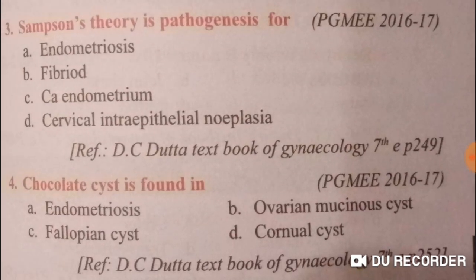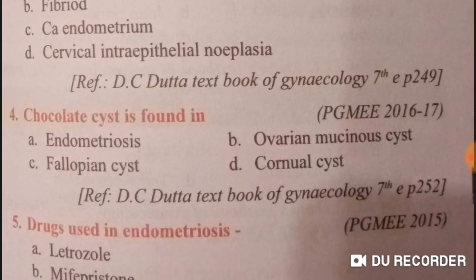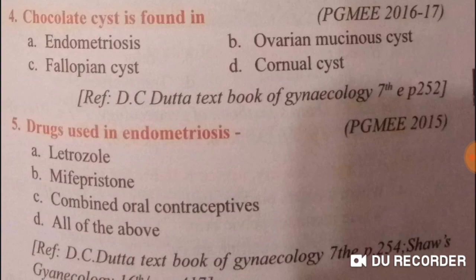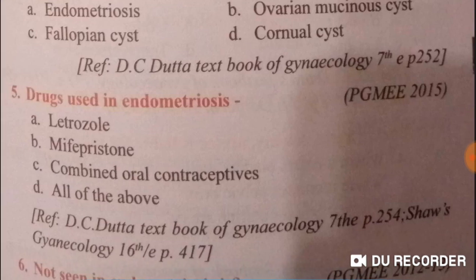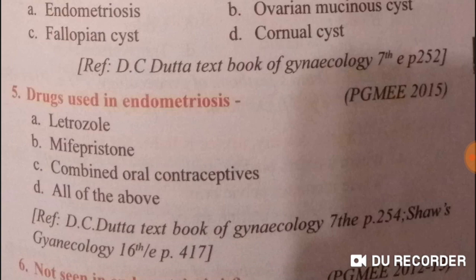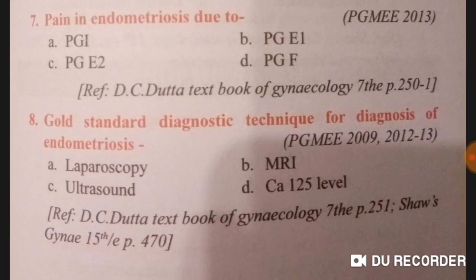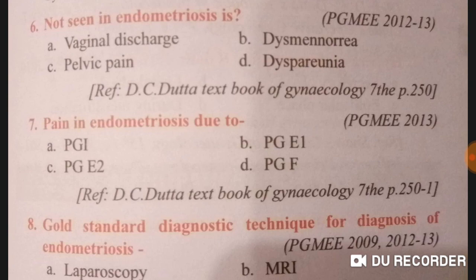Sampson's theory is the main pathogenesis for endometriosis — option A is right. Chocolate cyst is mainly found in endometriosis — option A is right. Drugs used in endometriosis include letrozole, mifepristone, oral combined contraceptives — so all of the above is the right answer.